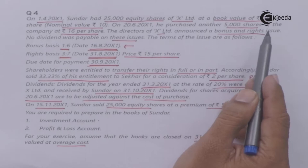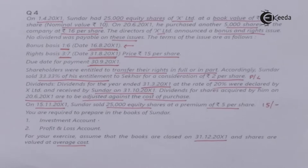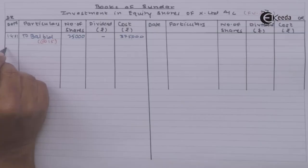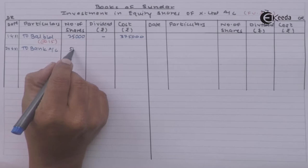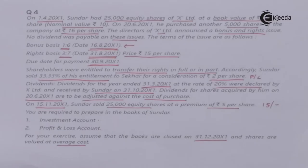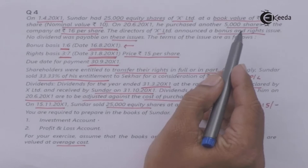On 28th June 2001, he purchased another 5,000 equity shares of the company at Rs.16 per share. Investment account is debited, bank account is credited. So we have purchased 5,000 shares.